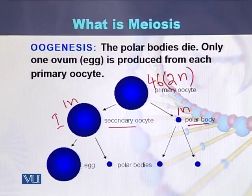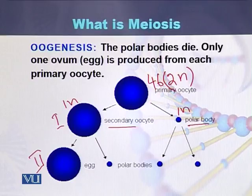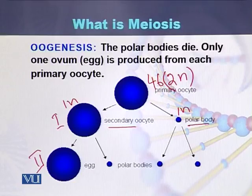Again, as a result of meiosis 2, the secondary oocyte divides into 2 and the polar body also divides into 2 — this division is like mitosis. As a result of oogenesis, one primary oocyte is converted into 4 cells: 3 of them are called polar bodies, while one is the egg. Polar bodies usually die, and the egg survives, containing 23 chromosomes or 1n.